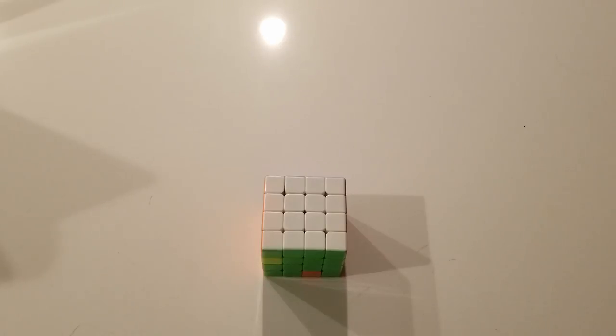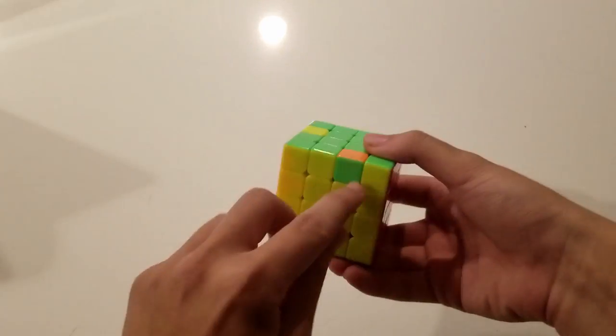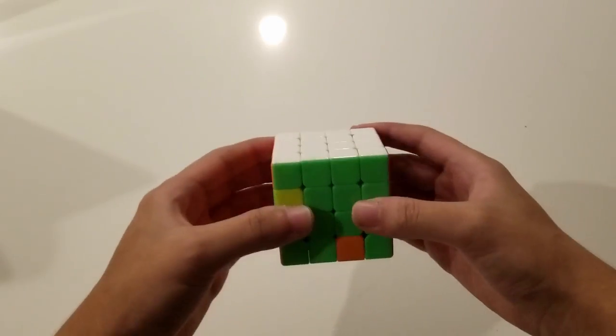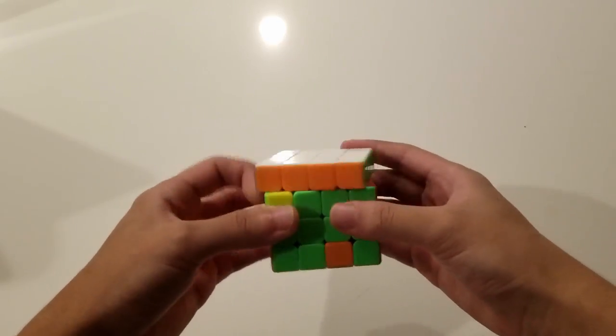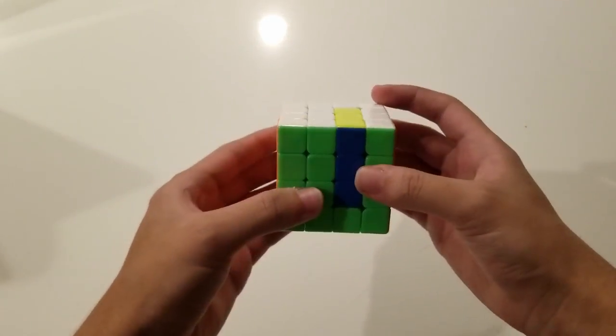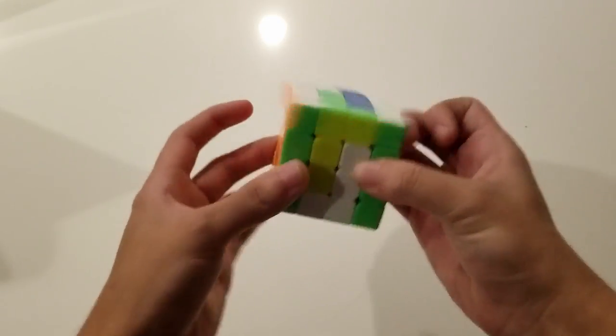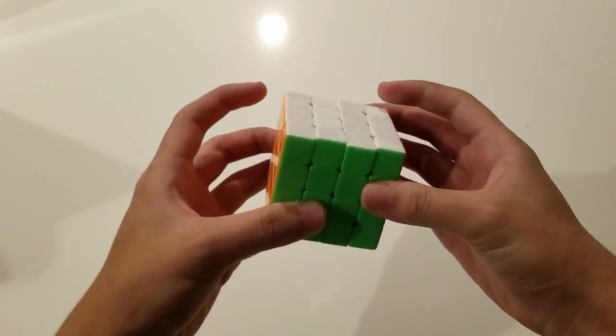Here's an example of how this would be applied in a solve. We have our last target right here and we have wing parity, so we simply execute this last target with R2 and now we just apply the algorithm. Simple as that.